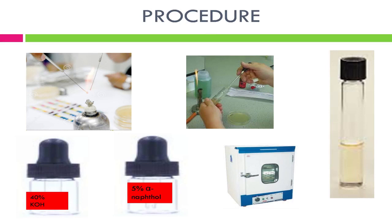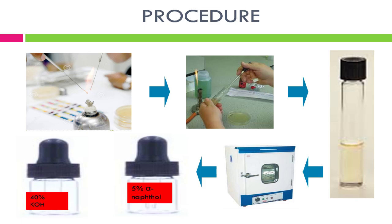Procedure for the VP test: sterilize the inoculating loop by flaming on a spirit lamp, dip into the bacterial suspension, and inoculate into the MRVP broth — or use a Pasteur pipette to dispense a few drops into the broth. Incubate for about 24 hours, then add 0.6 ml of 5% alpha-naphthol followed by 0.2 ml of 40% potassium hydroxide. It is essential that reagents be added in this order. Shake the tube gently to expose the medium to atmospheric oxygen and allow the tube to remain undisturbed for 10 to 15 minutes.